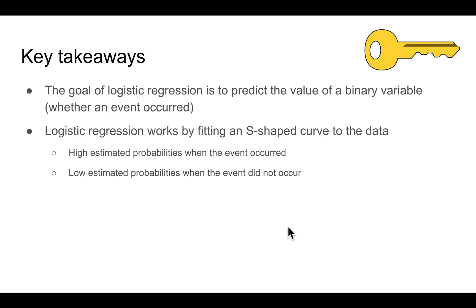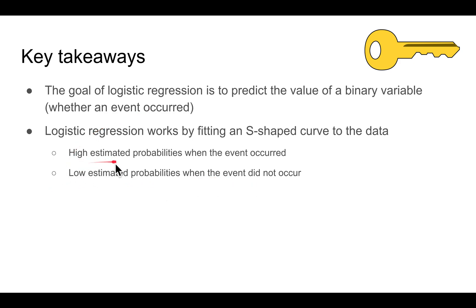What are the key takeaways from today? The goal of logistic regression is to predict the value of a binary response variable — basically whether an event occurred or not. Logistic regression works by fitting an S-shaped curve to the data with high probabilities when the event occurred and low probabilities when the event did not occur. Alright, that's all for now. See you next time. Bye!